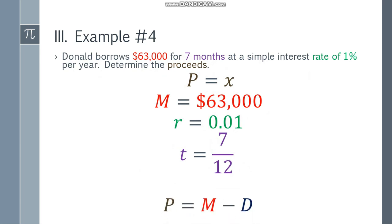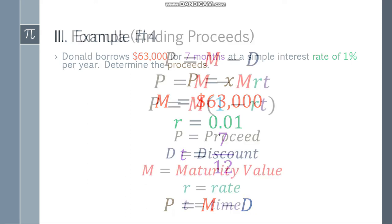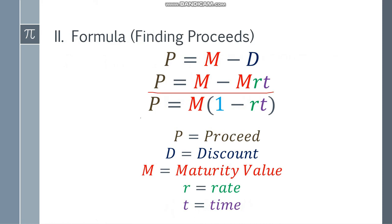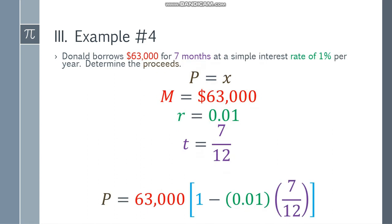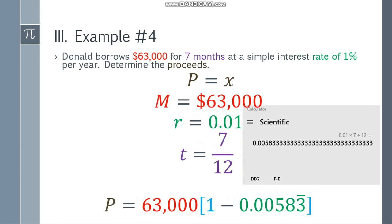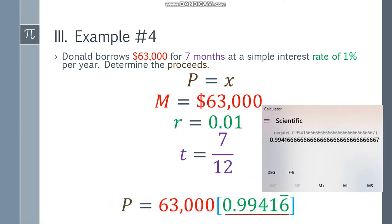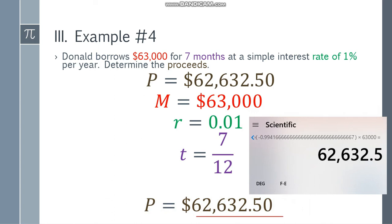We have the formula P equals M minus D, but we don't have the discount. You can check the other formula. Since we're complete with MRT, we can use P equals M times the quantity one minus RT. Substitute the values: 63,000 times the quantity 1 minus 0.01 times 7 over 12. First multiply 0.01 times 7 over 12, then subtract from 1, then multiply by 63,000. The final answer will be $62,632.50. That's the proceeds.